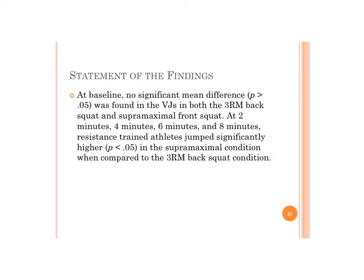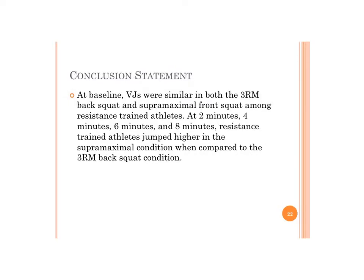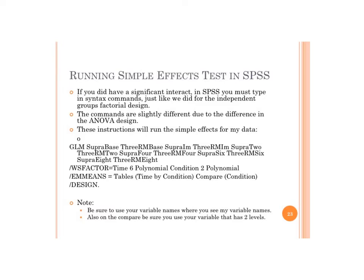The statement of findings: at baseline, no significant mean difference was found between vertical jumps in the 3RM back squat and super-maximal front squat. At two, four, six, and eight minutes, resistance-trained athletes jumped significantly higher in the super-maximal condition compared to the 3RM. The conclusion restates this without statistical jargon. The syntax for the simple effects test is available on Moodle, requiring variable names matching all ten columns plus time, polynomial, condition, and interaction terms.